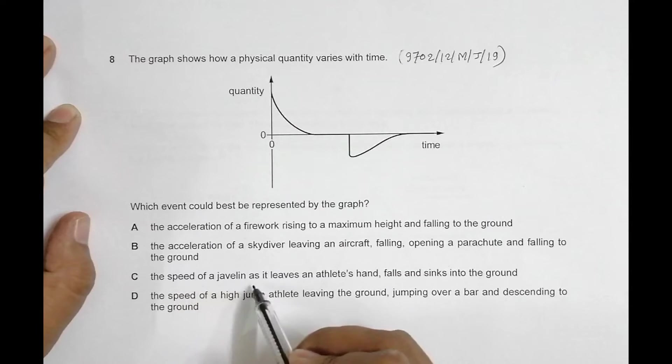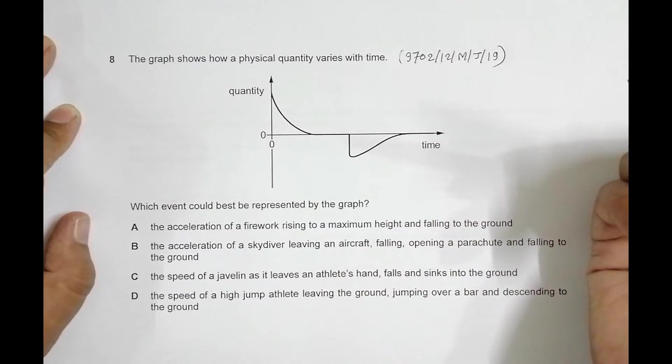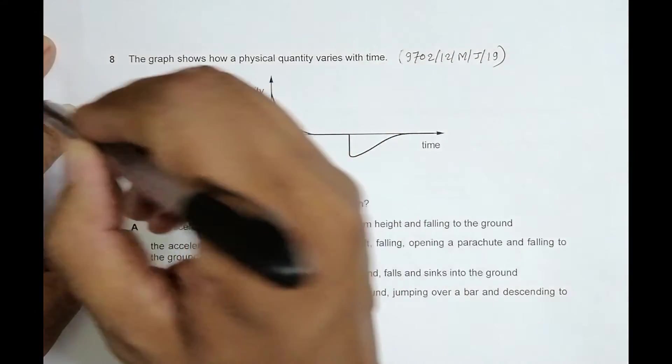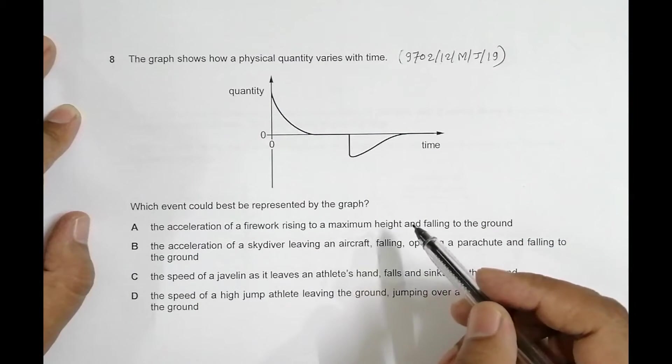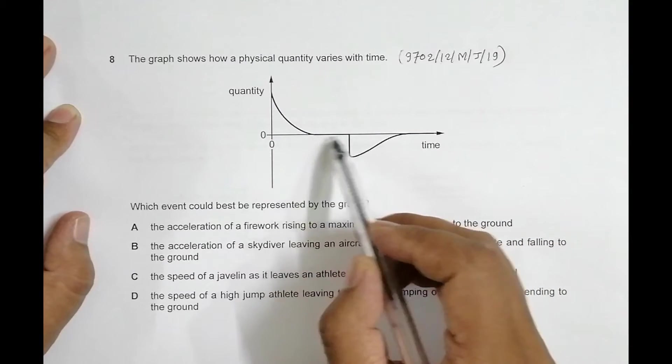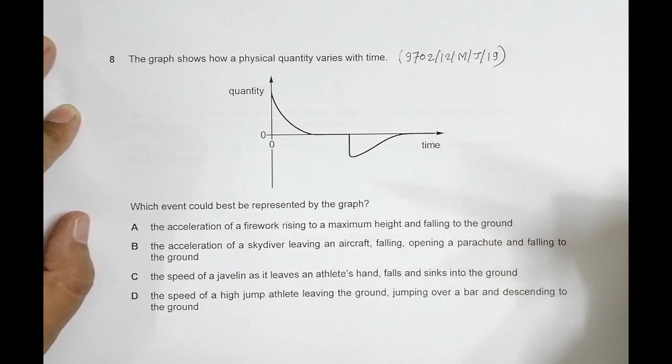the speed of the javelin as it leaves the athlete's hand. The javelin goes from the athlete somewhat like this, and the speed will be zero only when it strikes the ground and sinks under the ground.